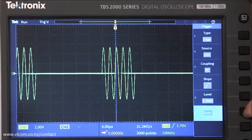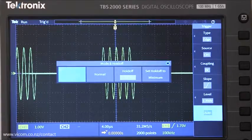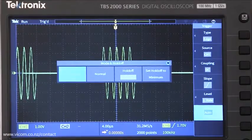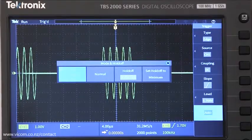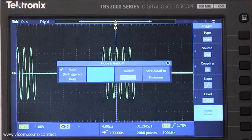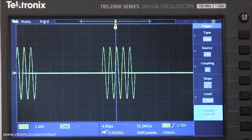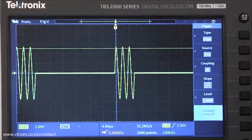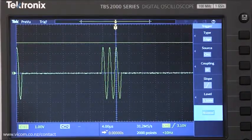The other trigger mode is normal mode. It's a little counterintuitive, but normal mode is not the default setting. When the trigger system is in normal mode, the scope acquires a waveform only when the trigger condition is met. So as you can see, when I lift it, it's no longer triggering.